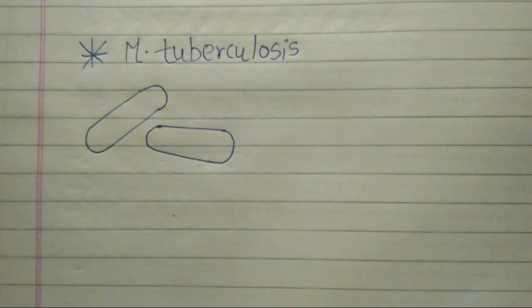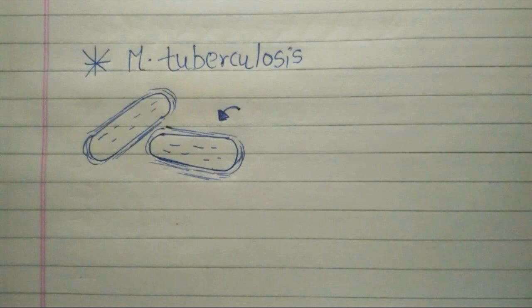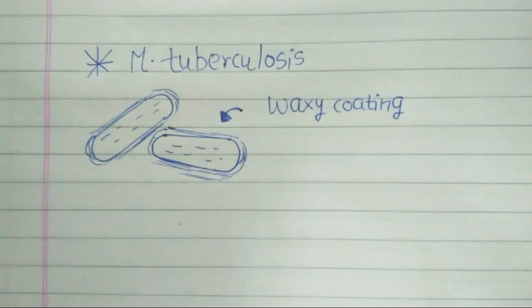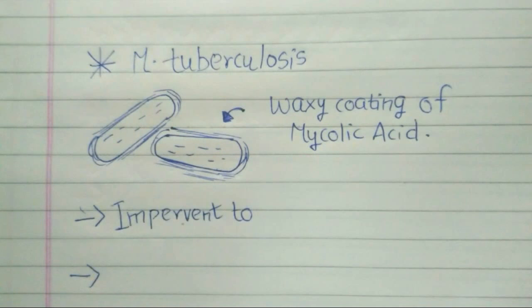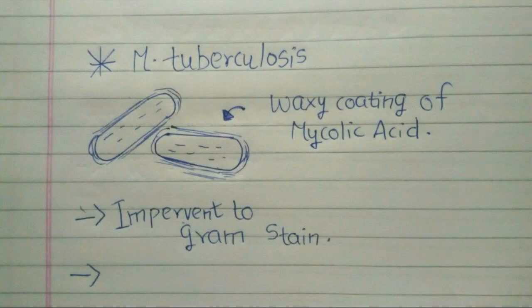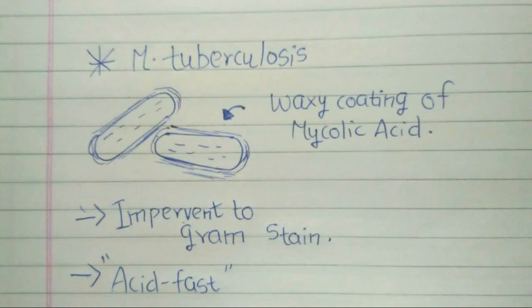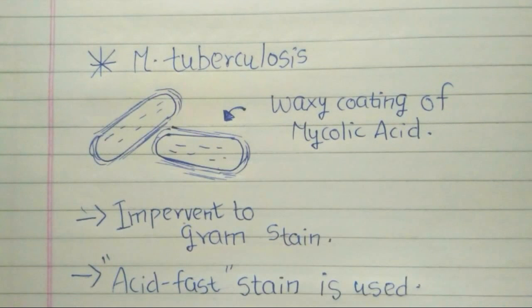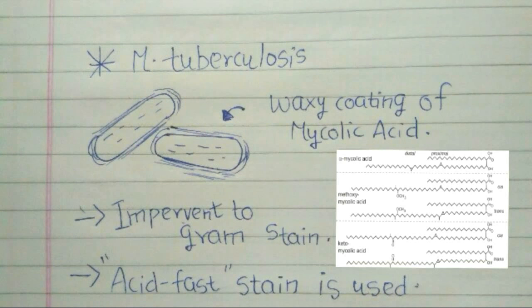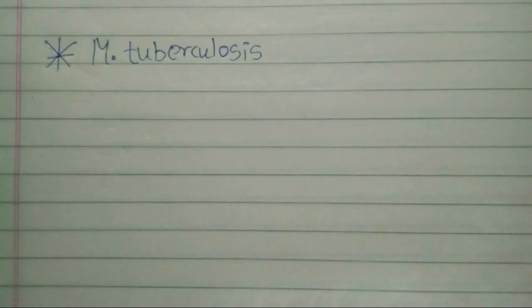M. tuberculosis has a unique waxy coating on its cell surface of mycolic acid, which is basically a lipid. This makes M. tuberculosis impervious to Gram stain — that is, the stain developed by scientist Gram, which is used to identify various bacteria under the microscope. However, they can be seen under acid-fast stains such as the Ziehl-Neelsen stain.